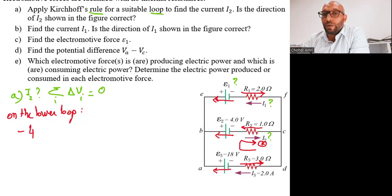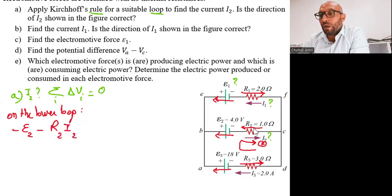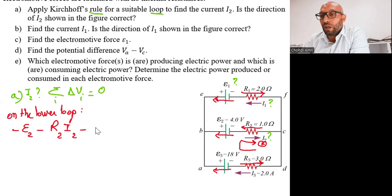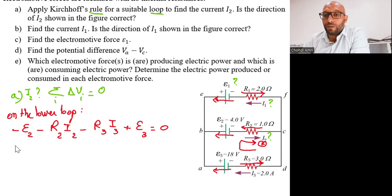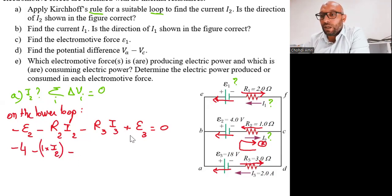The potential difference across R2 gives us minus R2·I2, because the direction of the potential difference across resistor R2 is opposite to the positive direction. Continuing around the loop, we also have minus R3·I3, and then plus epsilon 3. Their sum equals zero. Substituting the numbers: minus 4, minus R2 (which is 1 ohm) times I2, minus R3 (which is 3 ohms) times I3 (which is 2A), plus epsilon 3 (which is 18V), equals zero.